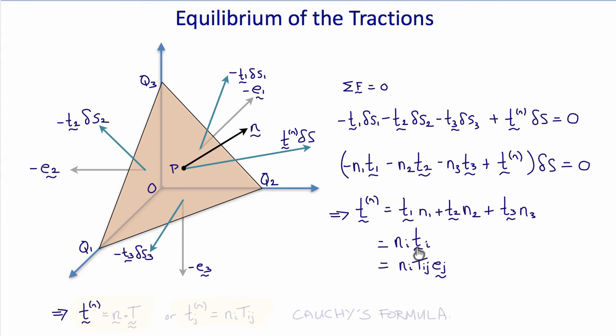And from our previous definition, T i, the tractions acting on each of the faces, are T i j e j. So this therefore gives us that the normal tractions acting on the surface with unit normal n, T, is equal to n times T, or in component notation, Tj superscript n equals n i T i j. And this is Cauchy's formula.